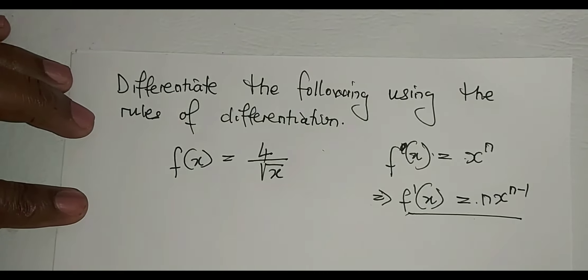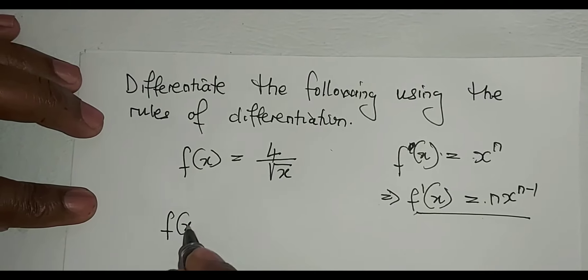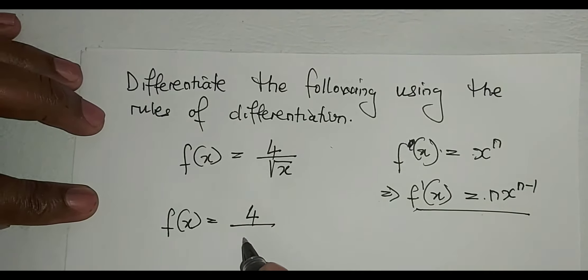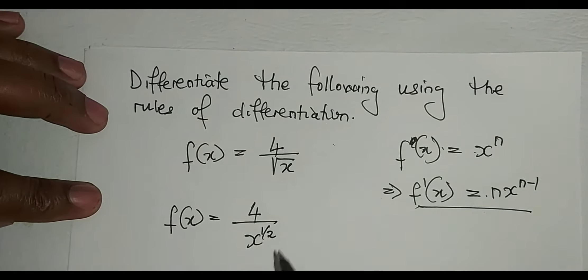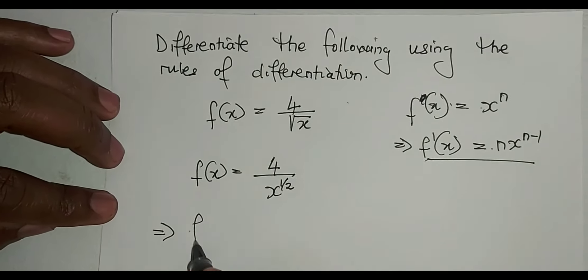Here we now need to differentiate this one, which means before differentiating it we must remove the square root, which means it will be equal to 4 over x to the power half. Then after that, it also implies that f(x) equals...